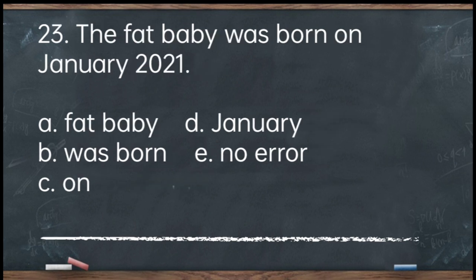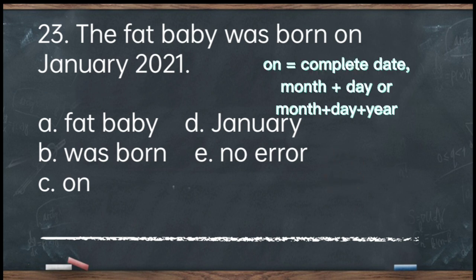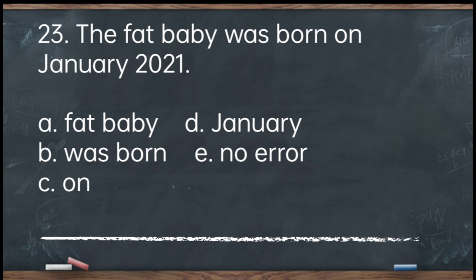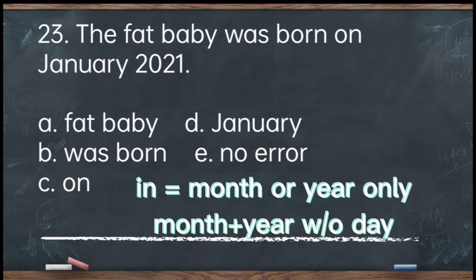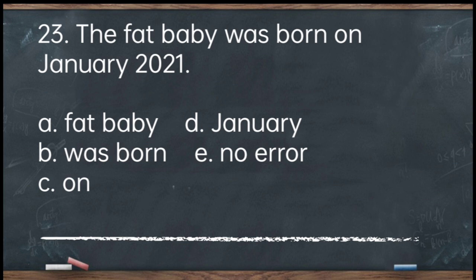Number 23. The fat baby was born on January 2021. A. Fat baby. B. Was born. C. On. D. January. E. No error. The answer is letter C — 'on.' 'On' is used for a complete date, such as January 19, 2021. We use 'in' for a month only, a year only, or a month and year combined. Corrected: The fat baby was born in January 2021.